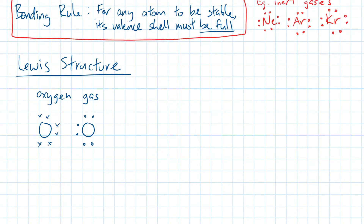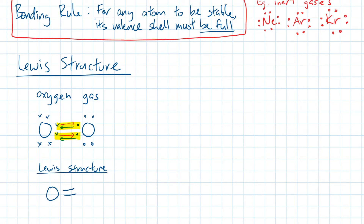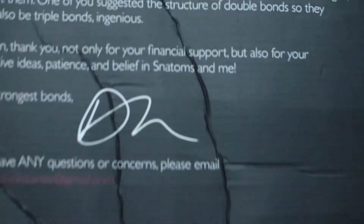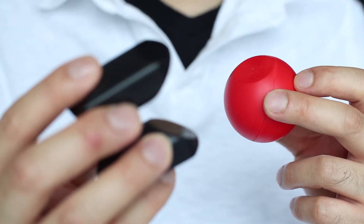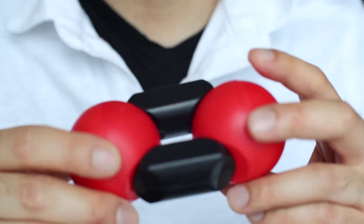The first oxygen will loan out two of its electrons to the second oxygen. In return, the second oxygen will return back the two electrons it borrowed and loan out two electrons to the first oxygen. Since two electrons are shared between the two atoms, this type of bond is known as a double bond. In a Lewis structure, this bond can be described by drawing two horizontal lines between the two oxygen symbols. Or if you own this toy, thanks Dr. Muller, you can show a double bond with two of these sticky things. Hooray! A molecule of oxygen gas!